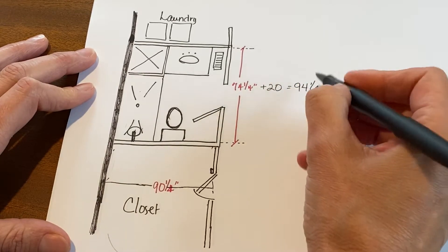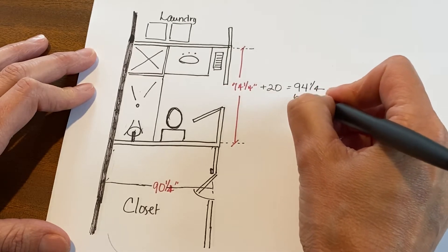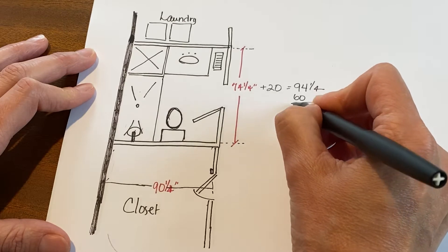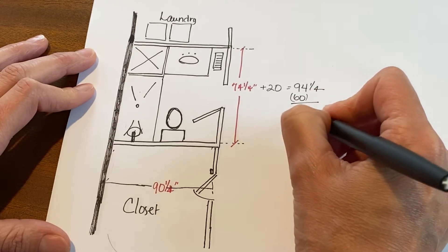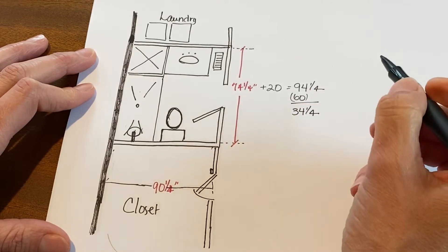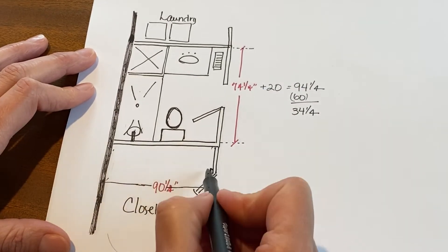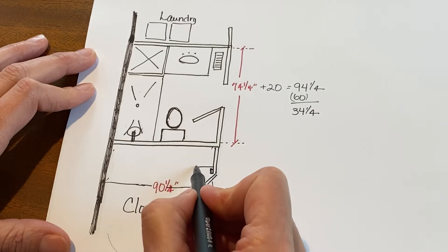I know a shower is five feet long, or a tub—that's standard—so that's 60 inches. If I subtract that, I was gonna have 34.25 inches left over. So then that got interesting. I thought, 'Now I can do something with that.' So in my mind I thought, 'Okay, I'm gonna slide this wall down.'